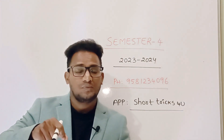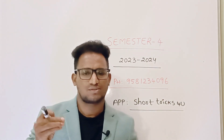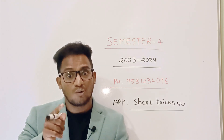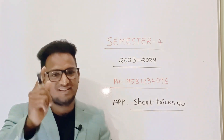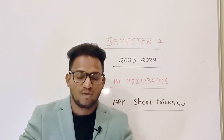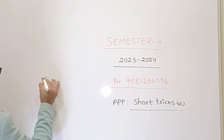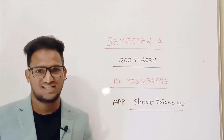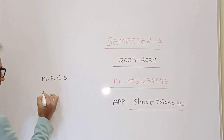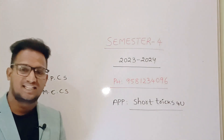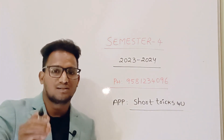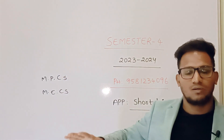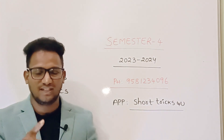One important point: for example, if you are an M.S.E.S. student — Maths, Statistics, and Computer Science — you have only group subjects. That is the point in the fourth semester. There are multiple groups. For example, M.P.C.S. means Maths and Physics with Computer Science. Similarly, M.E.C.S. means Maths, Electronics, and Computer Science. All are group subjects in the fourth semester.